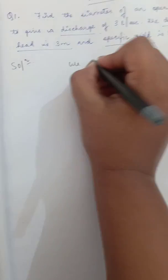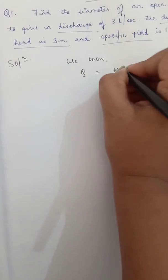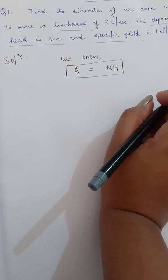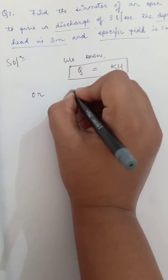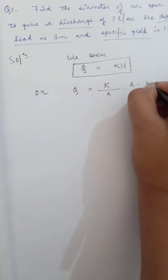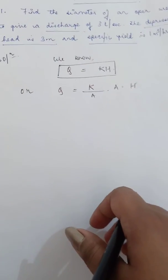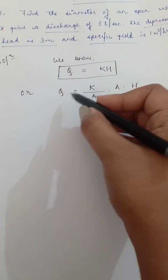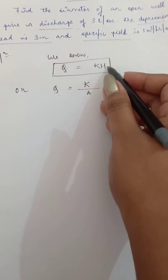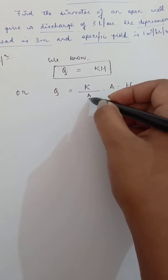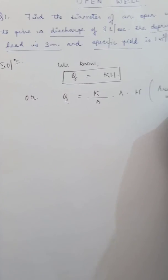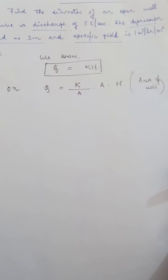We know from Darcy's law that Q equals k into h. We can also write this equation as Q equals k divided by A, into A, into h. Here A and A can be cancelled and we again get Q equal to kh. Now, A here is the area of the well.